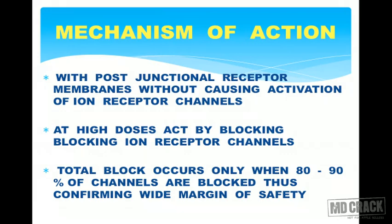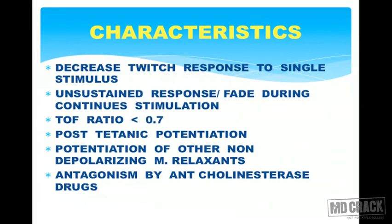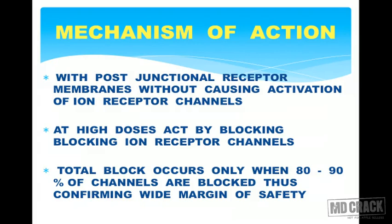Non-depolarizing muscle relaxants act with post-junctional receptor membranes without causing activation of the ion receptor channel. At high doses, they block the ion receptor channels. Total block occurs only when 80–90% of channels are blocked, confirming a wide margin of safety.